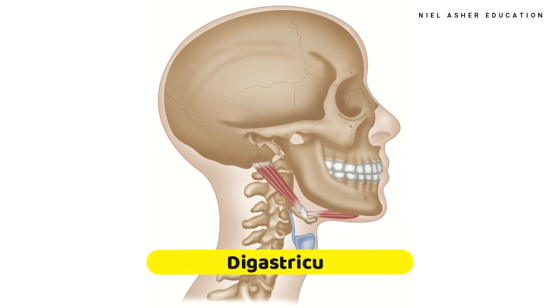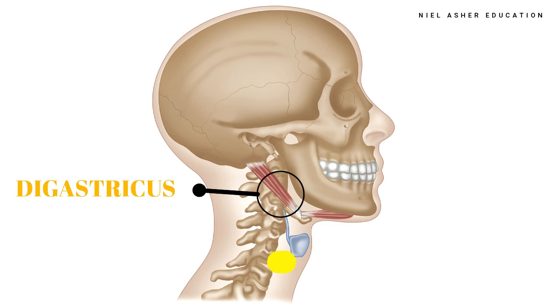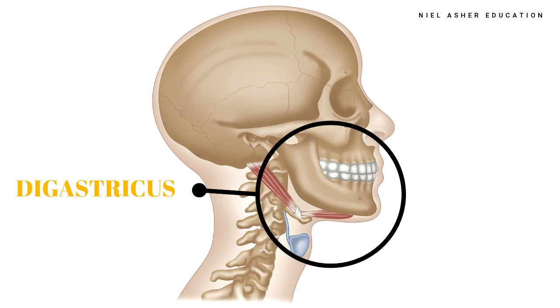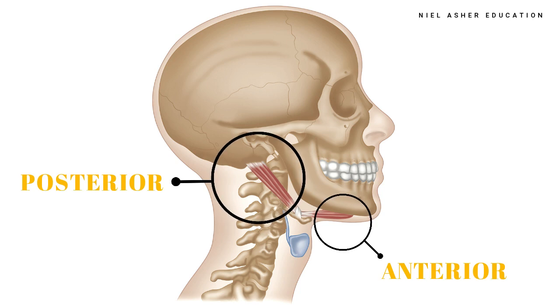I am now going to talk about the digastricus muscle, which can be found here. The name for this muscle comes from the Latin digastricus, meaning having two bellies, referring to the muscle.